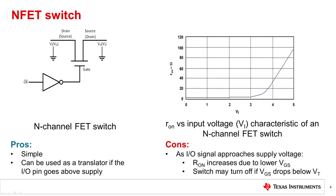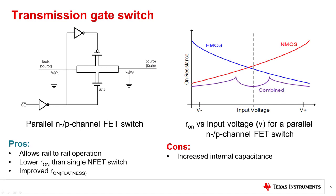The N-channel FET switch is simple and can be used as a level translator if the IO pin goes above supply. However, a key limitation of the NMOS series switch is that it can only pass signals up to a threshold voltage below VCC.